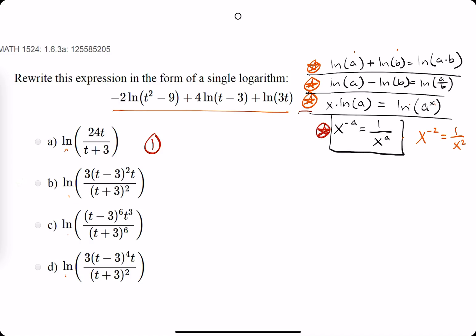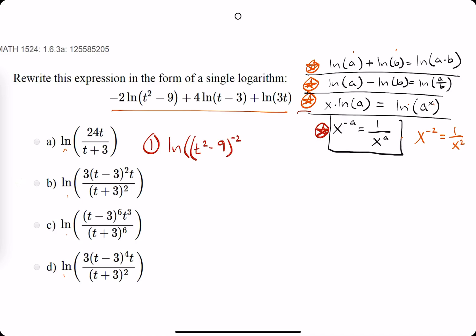We have negative 2, we are going to bring up as the exponent for, so we have ln of t squared minus 9, we are going to bring up that negative 2 as the exponent for that term. Then we bring up the 4, we have plus ln of t minus 3, and t minus 3 is raised to the fourth now, because we brought it up to the exponent. Then, the last term does not have a coefficient, so we just leave it as ln of 3t.